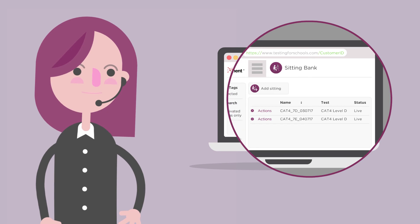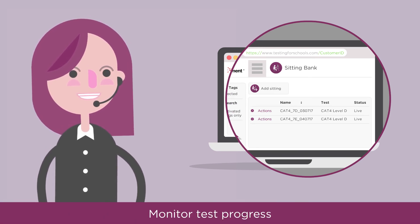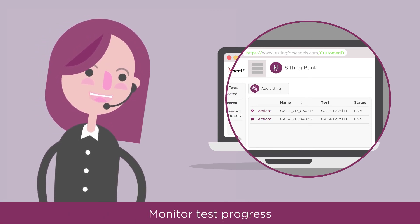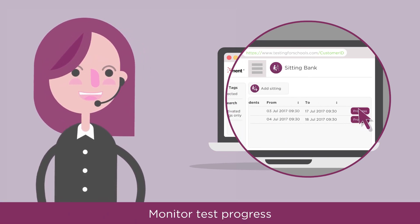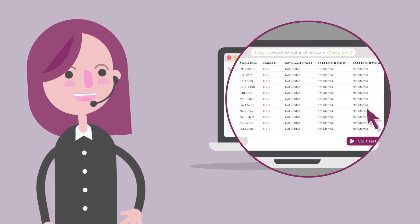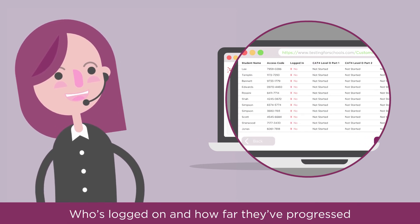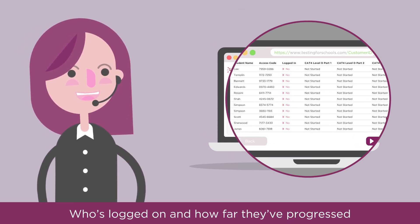You can check progress at any time by clicking on the progress button on the right hand side of the main sittings page. You will be able to see who has logged on and how far they've progressed with the test.